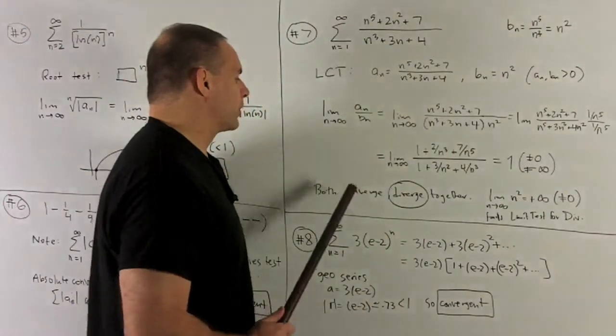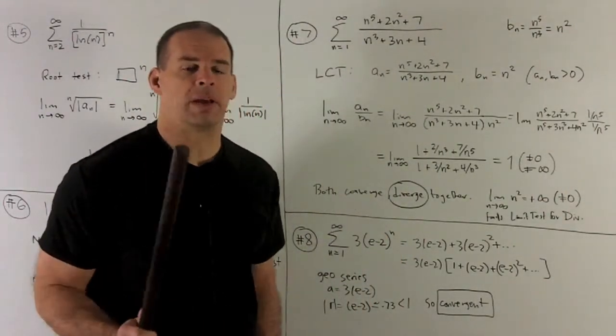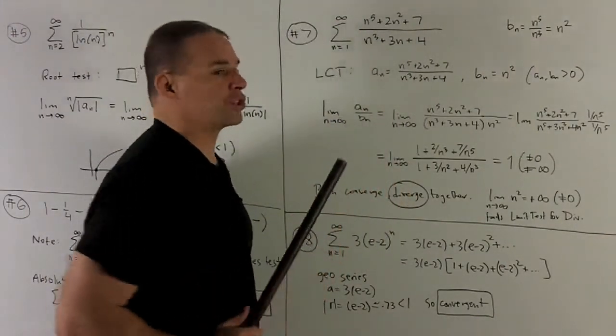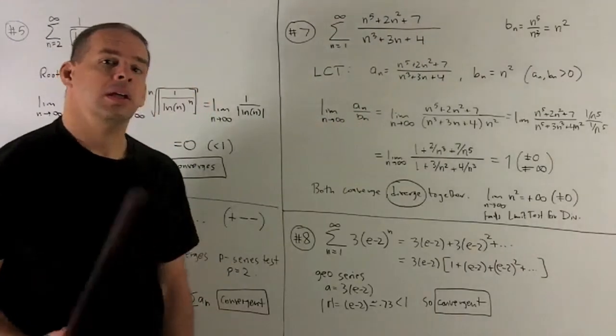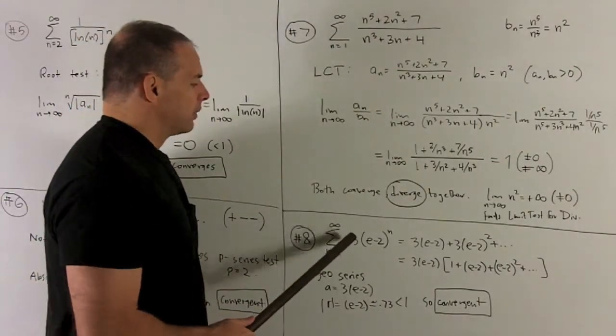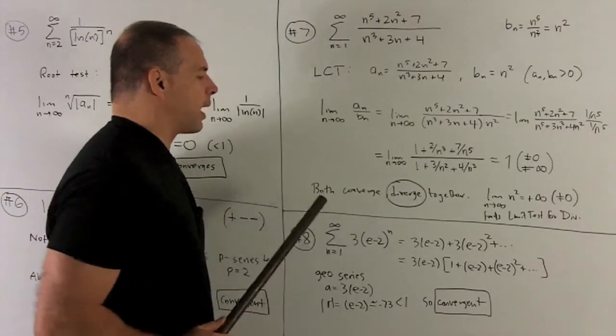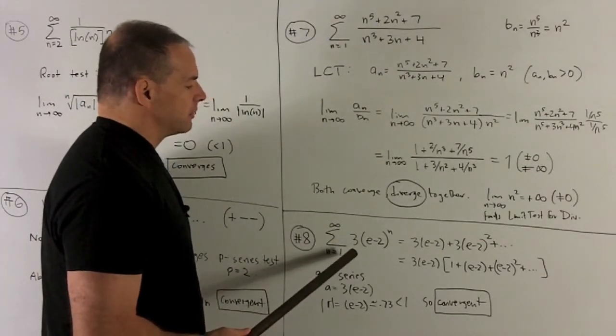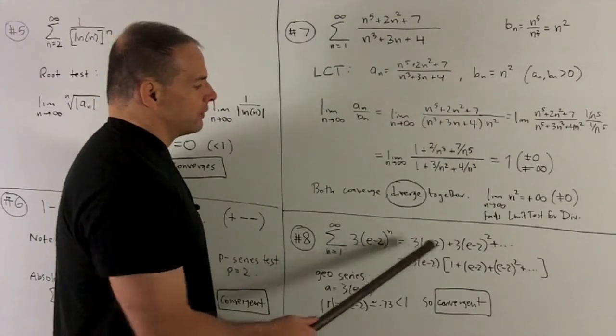So they either both converge or diverge together. So limit comparison test says our original series is going to diverge. Number 8, going from 1 to infinity, 3 times e minus 2 raised to the nth power. This is definitely going to be a geometric series.